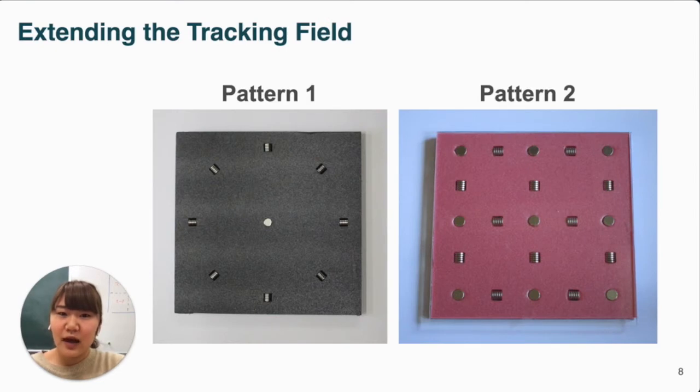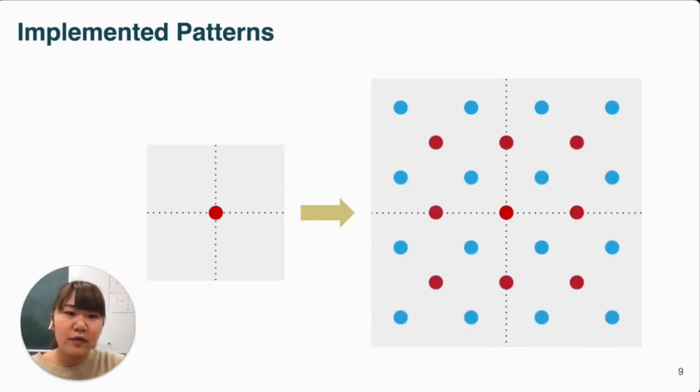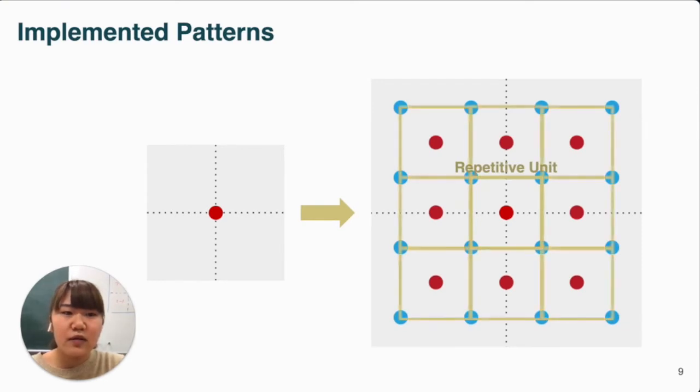Now, let's see how we extend the tracking field's range. We have implemented these two types of magnet arrangements. First, if you place magnets in a checker pattern, for example, this is the rotation of the same unit pattern, so the unit pattern is limited to the area of R-square.